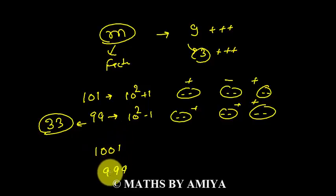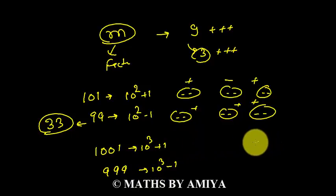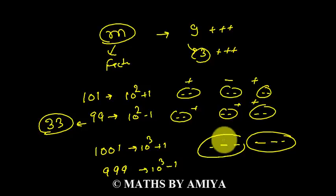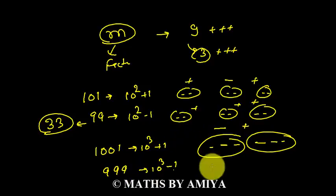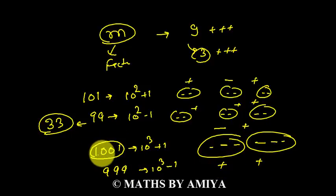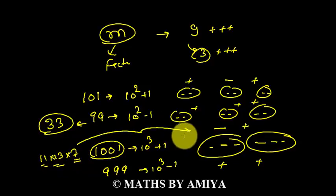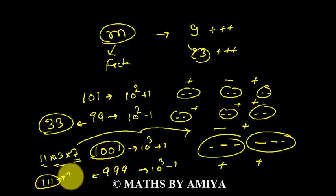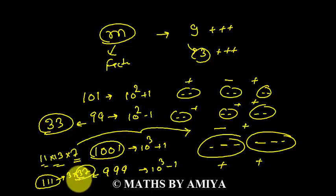The rule for 1001 (10 cubed plus 1) and 999 (10 cubed minus 1): both use bundles of 3 digits. For 1001, alternate bundles are subtracted — starting with plus from the right, then minus, plus, minus. For 999, make bundles of 3 digits and add all bundles. Also, 1001 equals 7 times 11 times 13, so the rule for 7, 11, and 13 is the same as for 1001. And 999 has 3 times 37 as factors, so the same bundling rule with all-plus applies to 3 and 37.